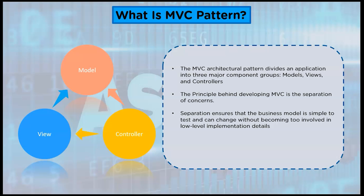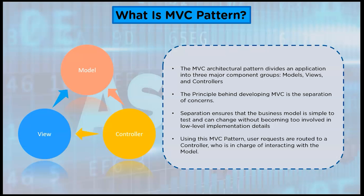Separation ensures that the business model is simple to test and can change without becoming too involved in low-level implementation details. Using this MVC pattern, user requests are routed to a controller who is in charge of interacting with the model to conduct user actions and receive query results. The controller selects the view to be displayed to the user and supplies it with any model data it requires.